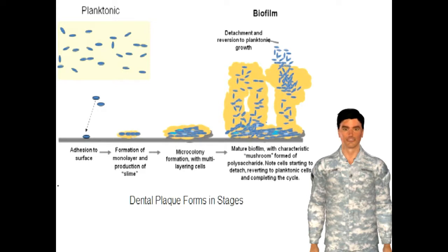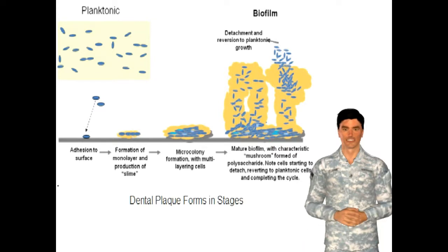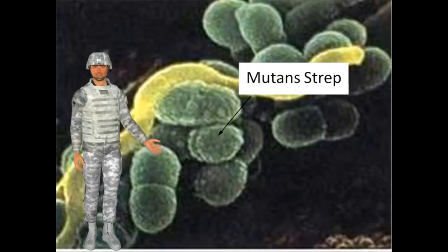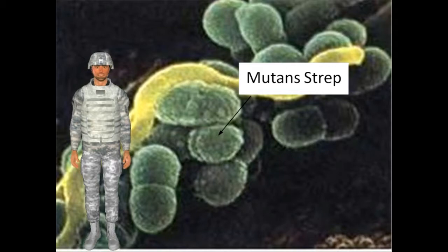This model shows how plaque forms on the tooth surface. Each microbe attaches to the tooth at a particular stage of development. Many of these microorganisms work for us, and we need them to be healthy. Good microbes protect against pathogens which cause diseases in the mouth and spread to the rest of the body. There are also bad microbes in dental plaque. Mutant strep, for example, is a group of bad bacteria which begins the cavity process. Under the right conditions, these bad bacteria can overpopulate in the mouth and put a soldier at high risk of dental decay.